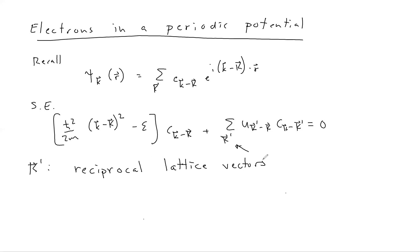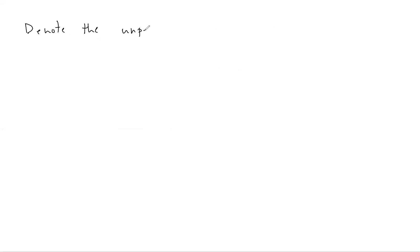Remember also that for fixed little k there are infinitely many solutions to this equation, which correspond to all possible values of k in the first Brillouin zone. Today we're going to take steps toward solving this equation when the U's are nonzero — when there's a nonzero coupling to the lattice. We'll denote the unperturbed energies as E0(Q) = ℏ²Q²/2m.